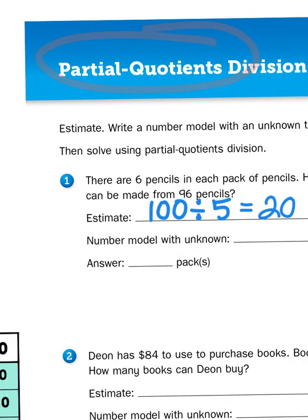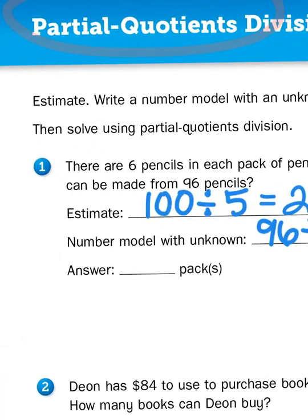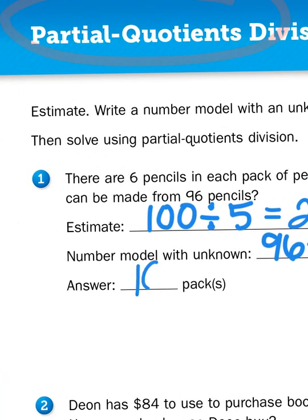So my number model with the unknown is 96 divided by 6. It's going to give me an unknown of P for pencil packs. And how many packs was I able to get out? Well, I was able to get out 16.